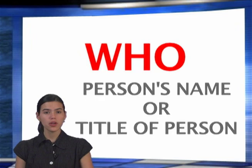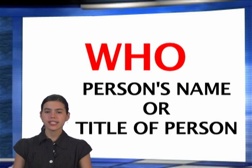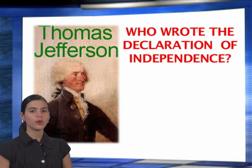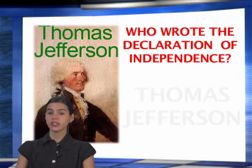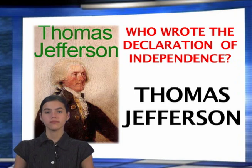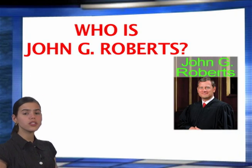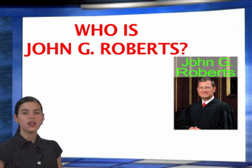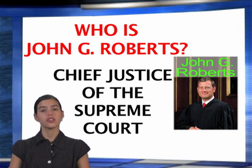Anytime you are asked a question that begins with the word who, you must always give a person's name or the title of a person. For example, who wrote the Declaration of Independence? The person is Thomas Jefferson. Or, who is John G. Roberts? The title is Chief Justice of the Supreme Court.